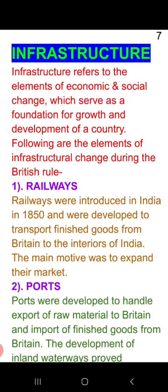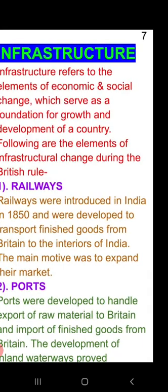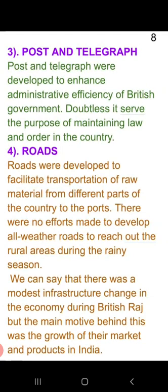Next is infrastructure. Infrastructure means the elements of social and economic changes. During British rule, there were infrastructural changes: railways were introduced in 1850 so that British goods could be transported from one place to another. Ports were established so that export and import could happen properly. Post and telegraph were also introduced to help maintain law and order in the country. Roads were constructed so that raw material from different parts of the country could be transported to the ports.